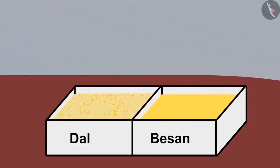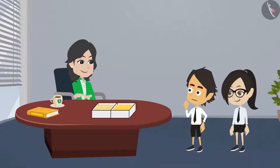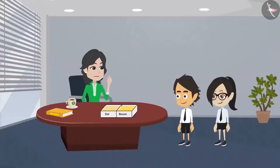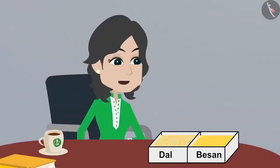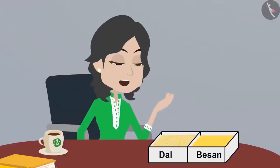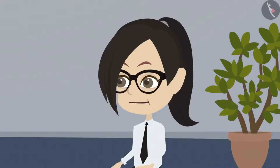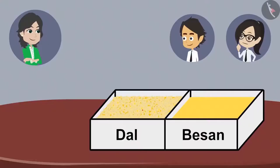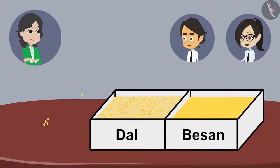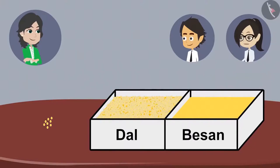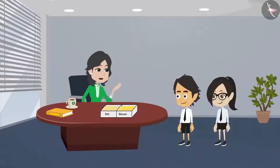Look, Vandana, I have kept those objects here. What is there in these boxes? Dal and besan. Tell me, how will you divide dal and besan into two equal parts? We can divide dal into two parts because we can count dal. Okay, please try. I will start counting from this pile of dal — one, two, three, four, five, six, seven, eight. This pile is huge. By the time I finish this, it will be late in the evening. This is not the right way to measure dal.